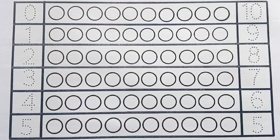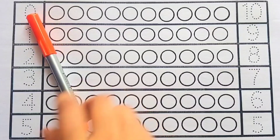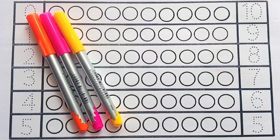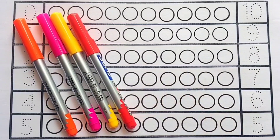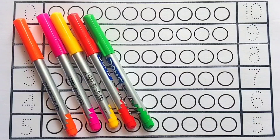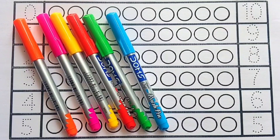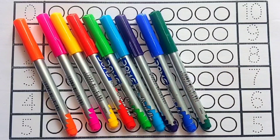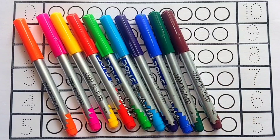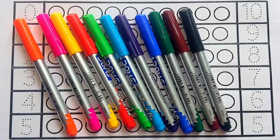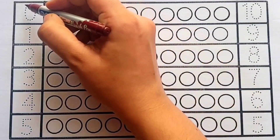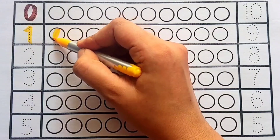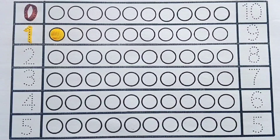Hello kids, let's learn 1 to 10. Orange color, pink color, yellow color, red color, light green color, sky blue color, purple color, blue color, green color, brown color, black color.